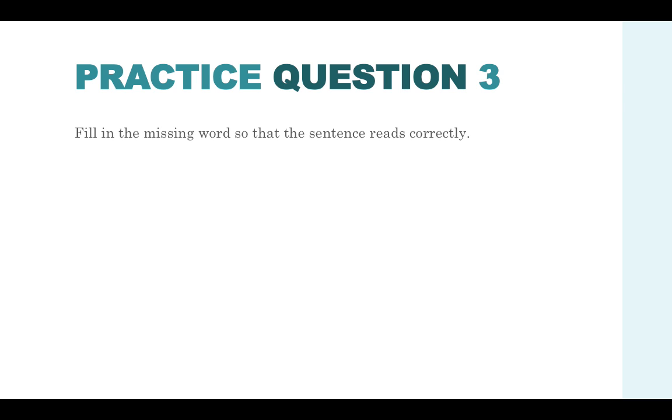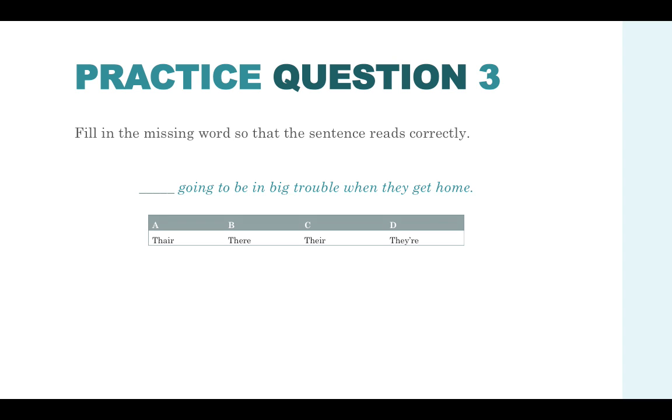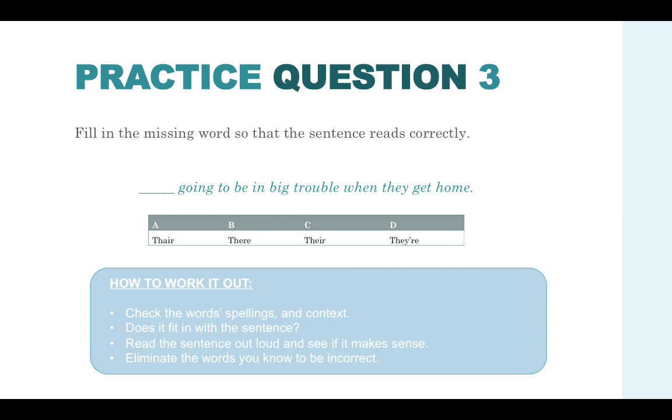Practice question three. Fill in the missing words so that the sentence reads correctly. Blank, going to be in big trouble when they get home. Then we've got option A, option B, option C and option D. They all sound very similar but they're spelt very differently and they do mean different things. Check the word spelling and context. Remember, it's going to determine whether or not you have the correct answer because the answers are very similar. Does it fit in with the sentence? Read the sentence out loud and see if it makes sense. And eliminate the words that you know to be incorrect.